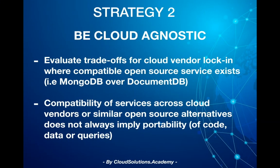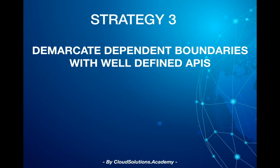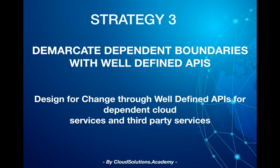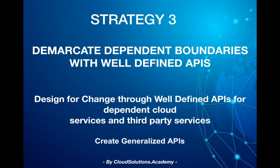The third strategy is to demarcate dependent boundaries with well-defined APIs. As part of this strategy, you should design for change through well-defined APIs for dependent cloud services and third-party services. For instance, each cloud vendor provides its own API to access services. So instead of using cloud APIs directly, you can create generalized APIs that can be used by your application. If you decide to migrate services, only the service implementation needs to be changed without affecting the overall application, providing flexibility and agility.